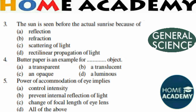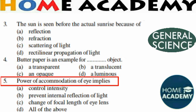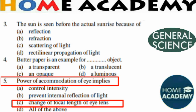Question number 5: Power of accommodation of the eye implies which of the following — control of intensity, prevention of internal reflection of light, or change of the focal length of the eye lens? The correct option is change of focal length of the eye lens.